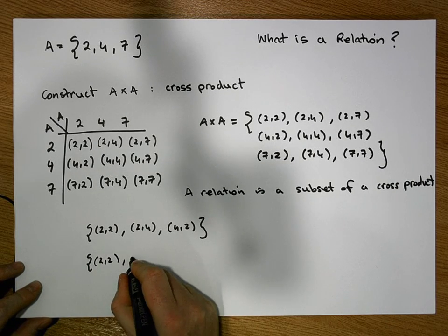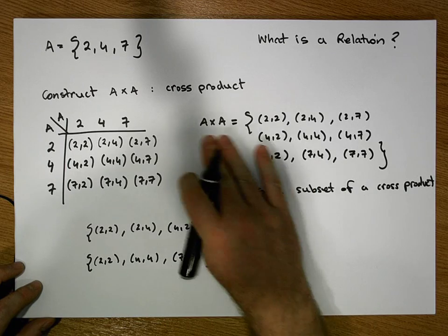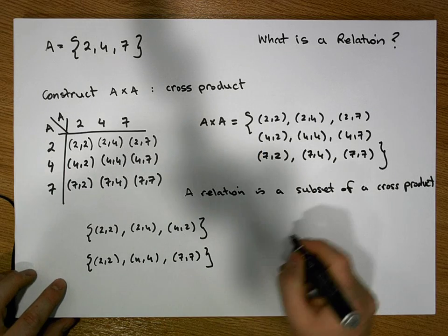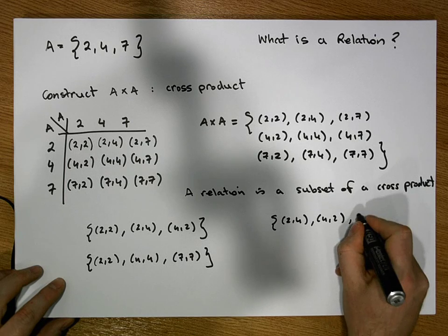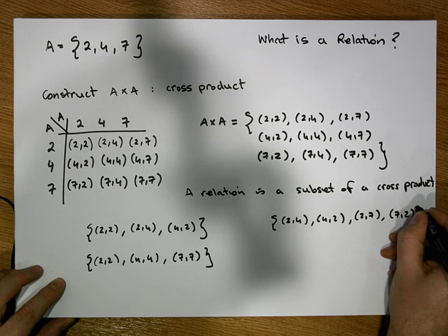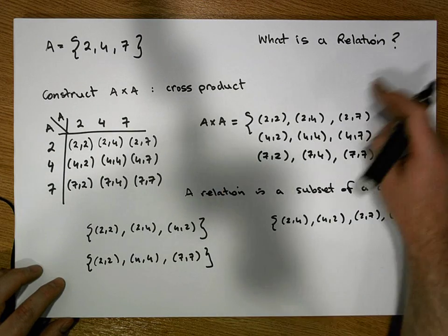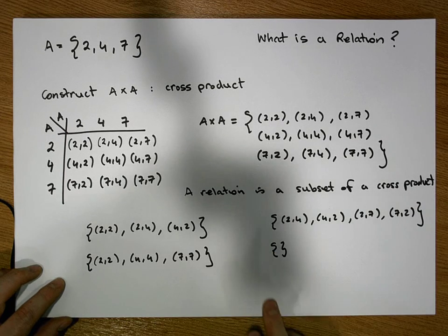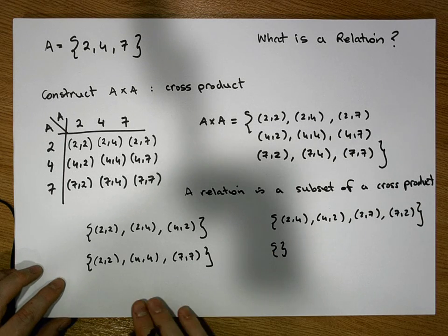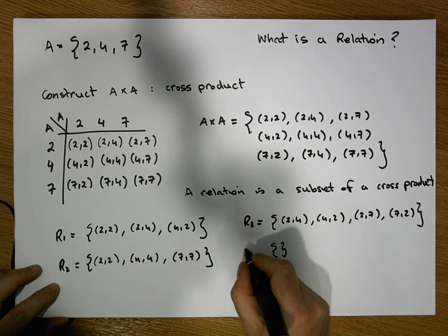I could choose a different set of ordered pairs — for example {(2,2), (4,4), (7,7)}, which is a subset of A cross A and therefore a relation. Or I could choose {(2,4), (4,2), (2,7), (7,2)}, again a subset, again a relation. I could even choose nothing at all — the empty set — and since the empty set is by definition a subset of all sets, the empty set is also a relation.